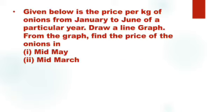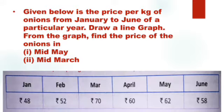Drawing a line graph. Given below is a price per kilogram of onions from January to June of a particular year. Draw a line graph, and from the graph find the price of the onions in mid-May and mid-March. The data are given as: January 48 rupees, February 52 rupees, March 70 rupees, April 60 rupees, May 62 rupees, and June 58 rupees.